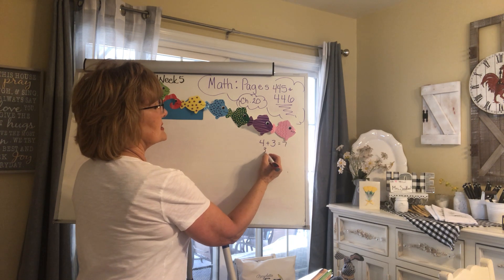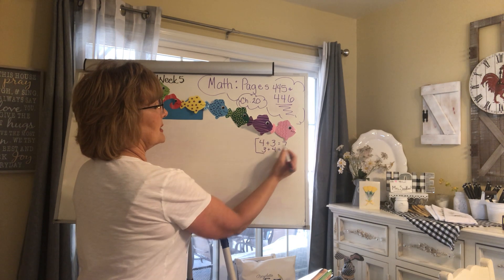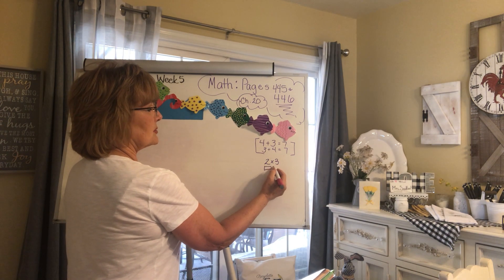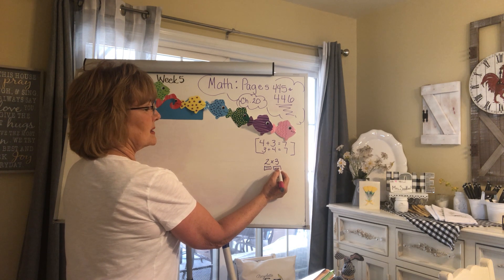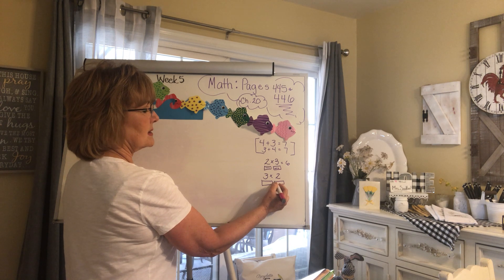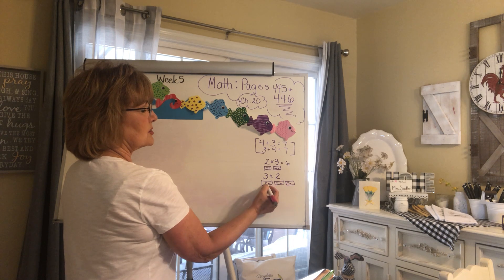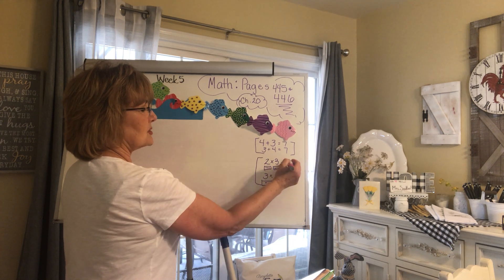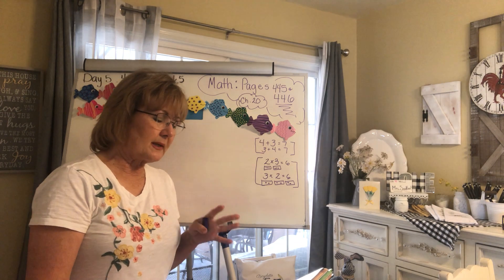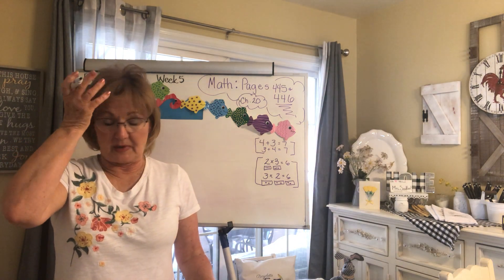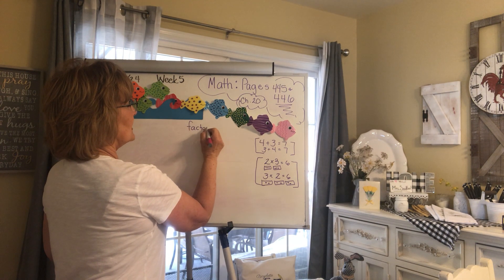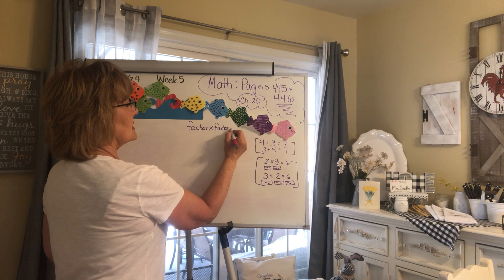Multiplication works the same way. If you have two groups of three, you have six. What if you have three groups of two? Two, four, six — so multiplication works the same way that addition does. They give you the example on top: multiply numbers in any order. The product is the name of the answer to a multiplication problem: factor times factor equals product.